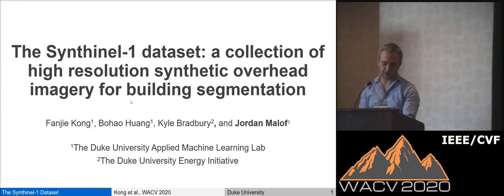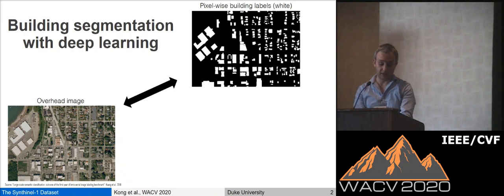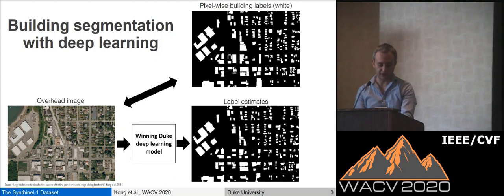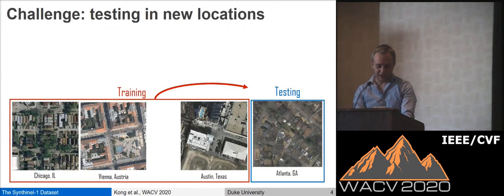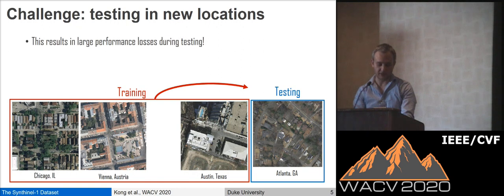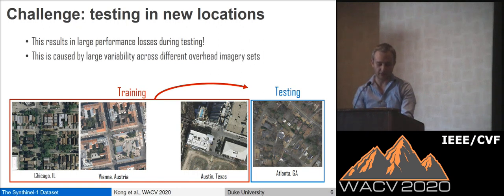Hello. My name is Jordan Maloff, assistant research professor at Duke University, and I will share our team's work on SynthenOL1, a collection of synthetic overhead imagery for training building segmentation models. In building segmentation, we wish to obtain pixel-wise labels of buildings visible in overhead imagery. Deep learning models have produced impressive results for building segmentation, as illustrated by our recent winning results on the INRIA benchmark. However, when we apply trained models to geographic locations not present in the training dataset, performance can drop substantially, because overhead imagery can vary tremendously due to scene content, lighting conditions, and many other factors. Modern models do not generalize well across these variations, and collecting training imagery that captures all real-world variability is completely infeasible due to the extremely high cost of purchasing and annotating such imagery.